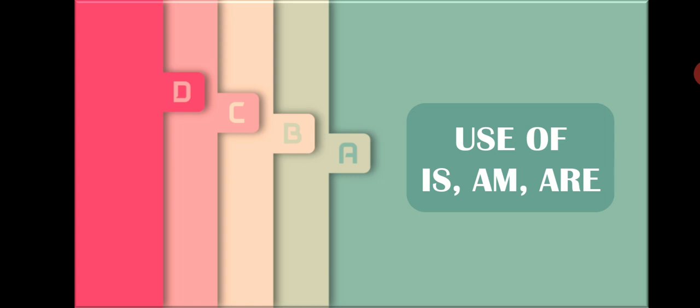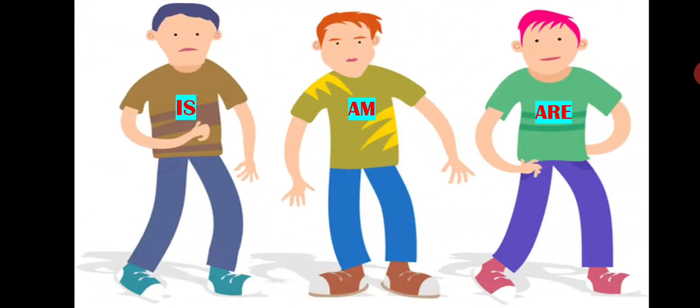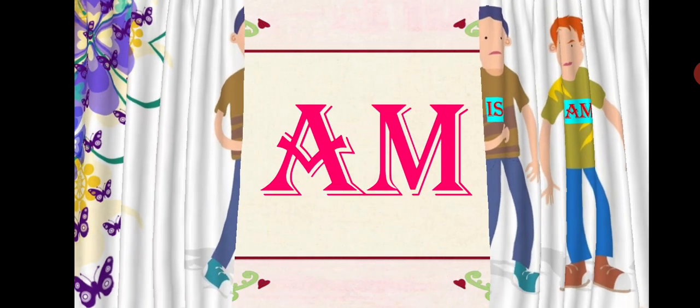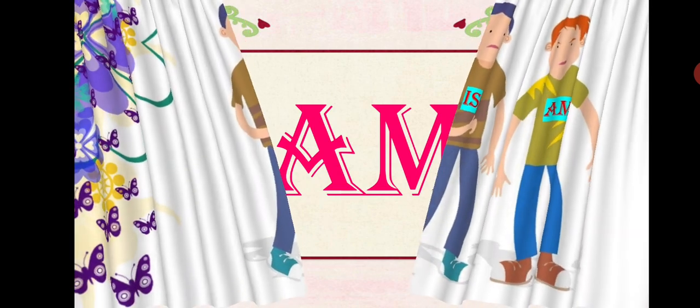Alright, before starting let me tell you a short story of three brothers so that you can understand the concept easily. So is, am, and are are three brothers. Each one of them has their own qualities. Today we will discuss about the first two brothers only, that is is and am.